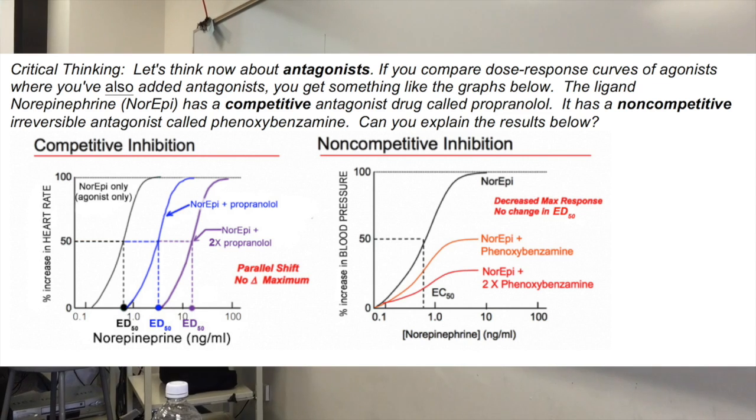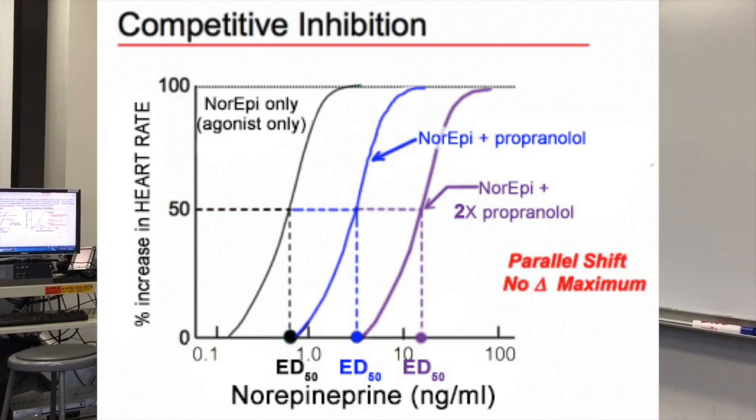For this first one, this is for competitive inhibition, what you're seeing here is increasing doses of norepinephrine. Norepinephrine is the normal neurotransmitter for the sympathetic nervous system, but you can also actually give it IV and usually you're only going to give it IV when somebody is almost dead because it's like a last ditch drug that you use when someone has terrible shock. But if you give increasing doses of norepinephrine, you'll see an increase in heart rate. So if you had a hundred percent increase in heart rate, that means their heart rate doubled. So norepinephrine, this is that curve.